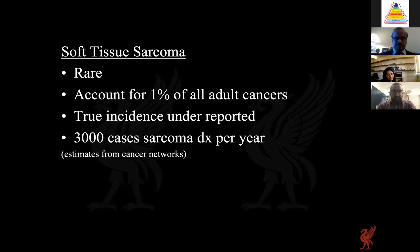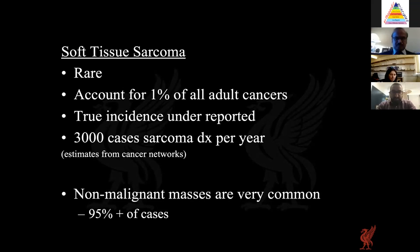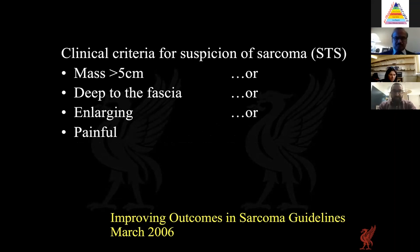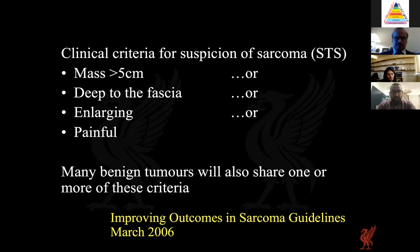Soft tissue sarcomas are generally rare, accounting for about 1% of all adult cancers, with the true incidence likely underreported — estimated at about 3,000 cases per year. By far, many more non-malignant masses exist, accounting for 95% or more of lumps presenting to physicians. Some criteria suspicious for soft tissue sarcoma include size greater than five centimetres, a mass deep to fascia, enlarging or rapidly enlarging, and painful. However, many benign tumours also share one or more of these criteria.